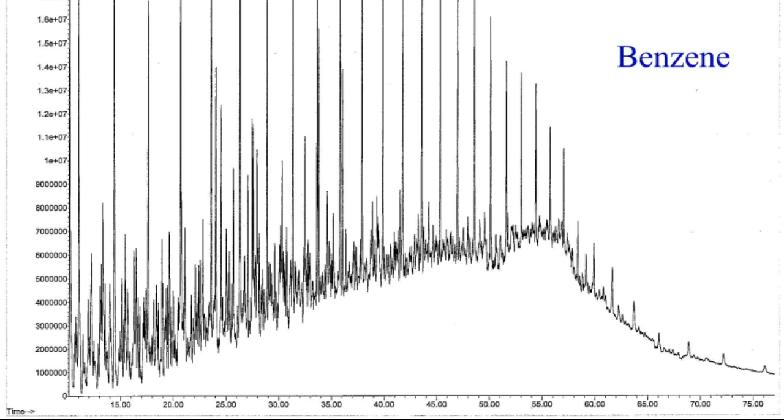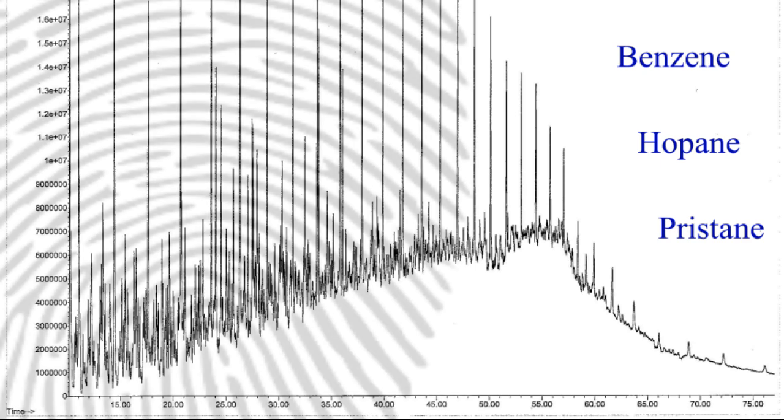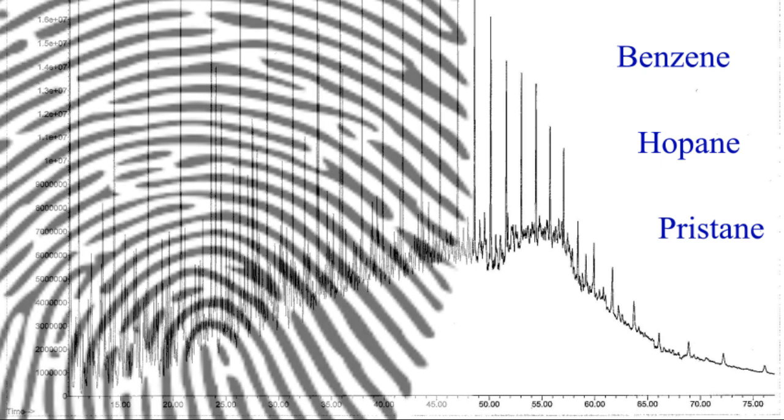Each line represents chemicals such as benzene, hopane, or pristine. These chemicals and others, like them, produce a unique fingerprint that chemists can match to a source, just like a detective can match a fingerprint to a suspect.